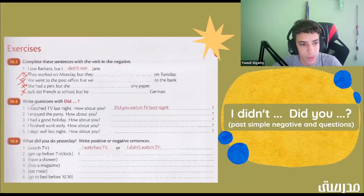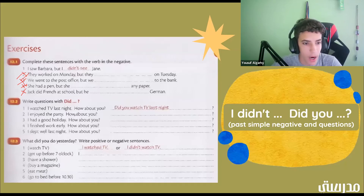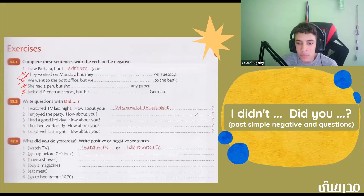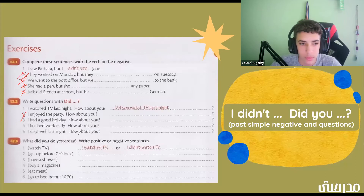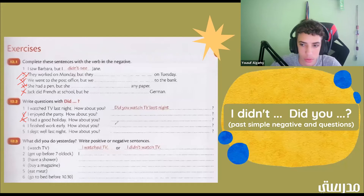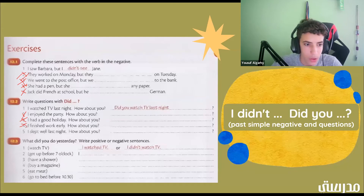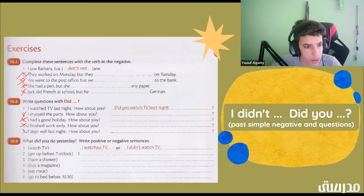Now write the questions with 'did.' 'I watched TV last night — how about you?' → 'Did you watch TV last night?' 'I enjoyed the party — how about you?' → 'Did you enjoy the party?' 'I had a good holiday — how about you?' → 'Did you have a good holiday?' 'I finished work early — how about you?' → 'Did you finish work early?' 'I slept well last night — how about you?' → 'Did you sleep well last night?'